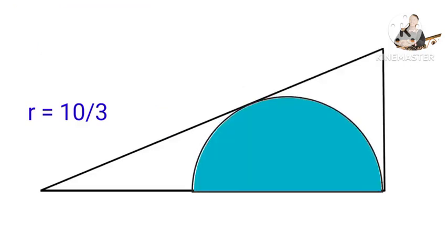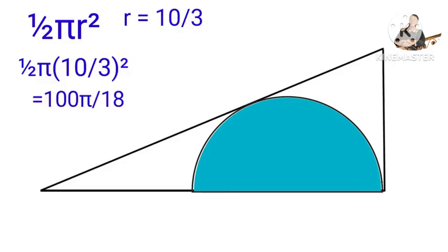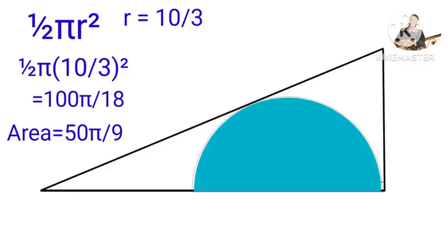To find the area of the semicircle, the area of a semicircle is 1 over 2 pi R squared. This equals 100 pi over 18. Area will be equal to 50 pi over 9. I know that you have gained value in this lesson.